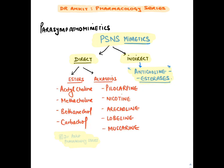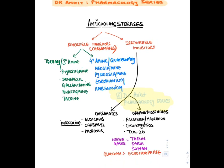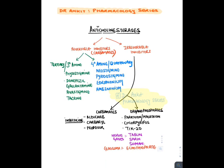Indirectly acting drugs increase the level of acetylcholine by inhibiting its degradation. They are known as anticholinesterases, which inhibit the acetylcholinesterase enzyme. These anticholinesterases inhibit the enzyme in either a reversible or irreversible fashion. Reversible inhibitors are known as carbamates, while irreversible inhibitors include both carbamates and organophosphates. Reversible inhibitors are much safer and are used clinically, while irreversible inhibitors are used mainly as poisons.